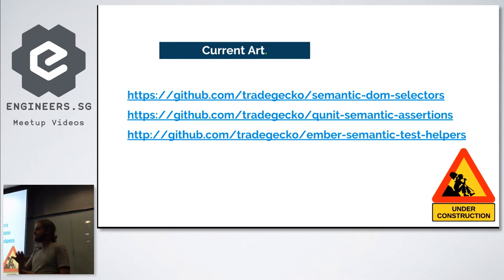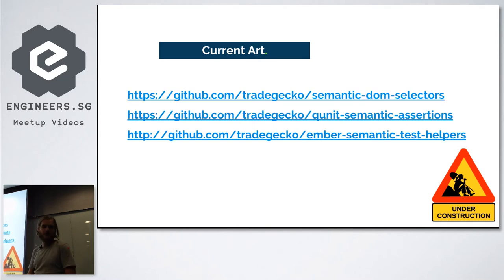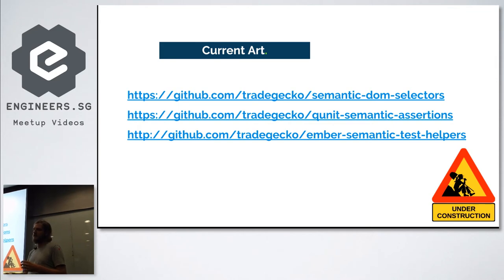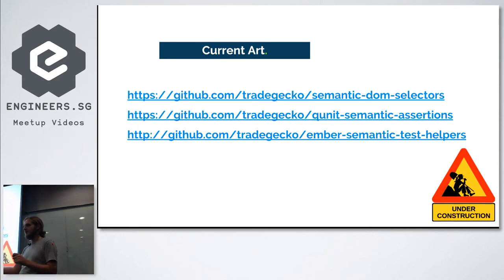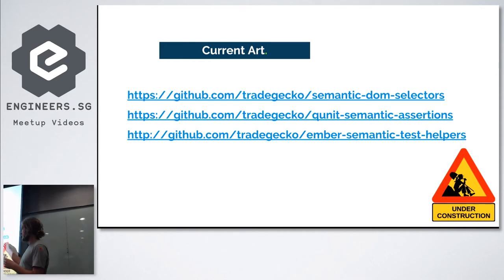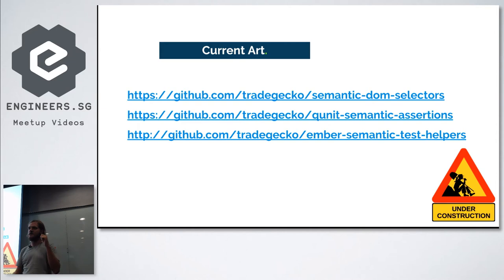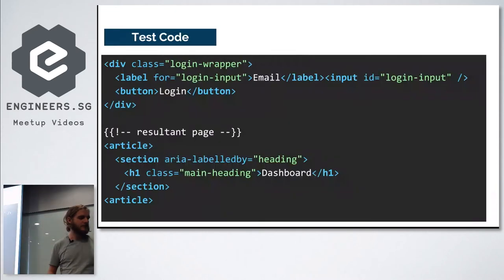We use Rails and Ember at TradeGecko, so I initially built this for the Ember community as a package called ember-semantic-test-helpers. I then extracted semantic-dom-selectors, which is the engine that converts 'save' into an HTML element, and qunit-semantic-assertions, which uses semantic-dom-selectors to make assertions testing the semantics and accessibility of the application.